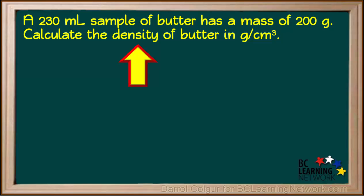In this example, we are given that a 230 mL sample of butter has a mass of 200 grams, and we are asked to calculate the density of butter in grams per centimeter cubed, or grams per cubic centimeter.